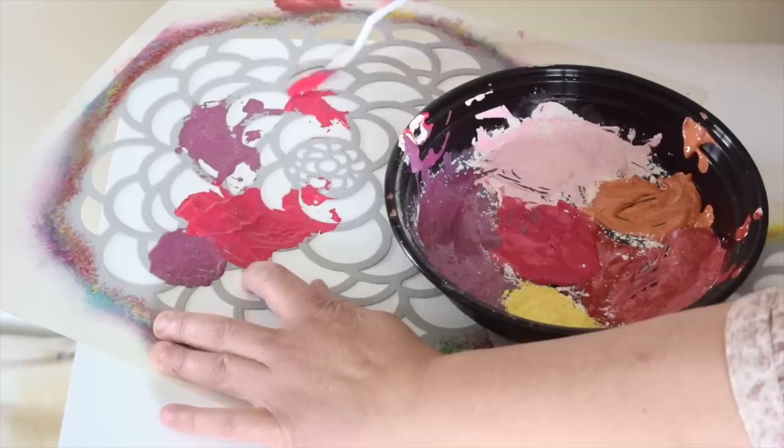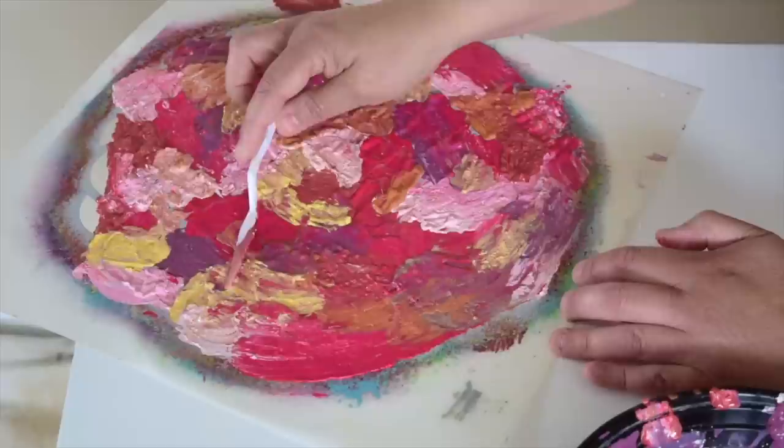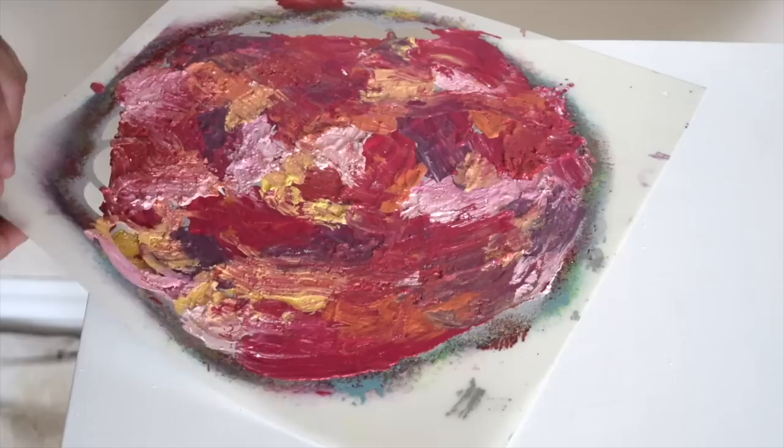I'm going to start putting it over the stencil and spread this all over, holding down the stencil as much as possible. Once you have your stencil completely covered, you want to very gently take off a little bit off the top. We can peel up that stencil.